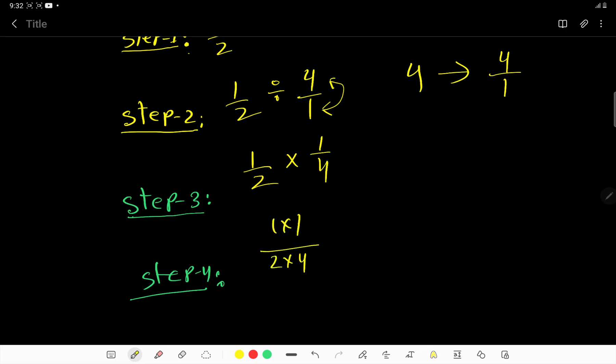Here we are getting 1 over 2 times 4, that is 8. So 1 over 8 is the answer. Thank you for viewing this video. Be well.